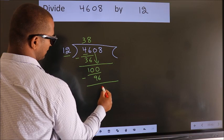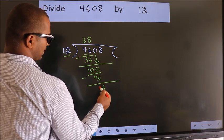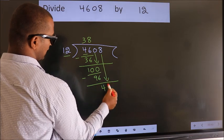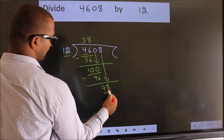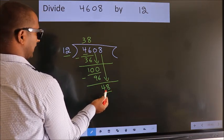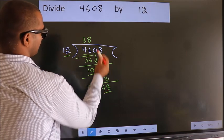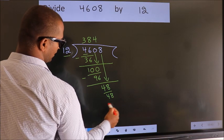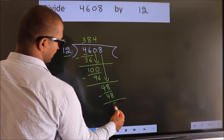After this, bring down the beside number. So 8 down. 48. When do we get 48 in the 12 table? 12 fours, 48. Now we subtract. We get 0.